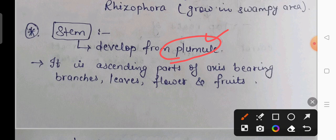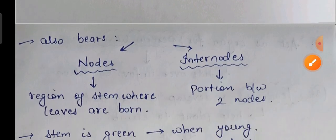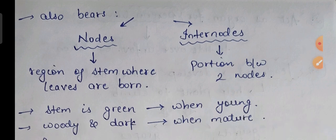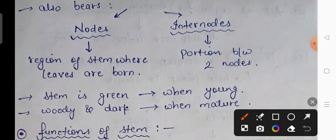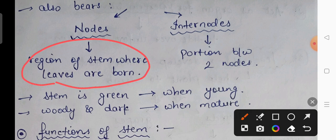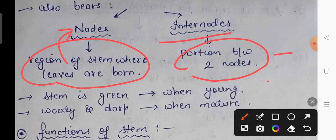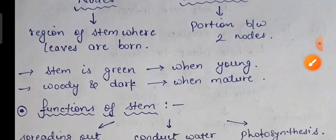Nodes are the areas where leaves arise. The region between two nodes is the internode. The stem is generally green in color when the plant is young. When the plant is fully mature, the stem becomes woody and takes on darker color shades. The functions of the stem include: spreading out branches bearing leaves, flowers, and fruit; conducting water and minerals; and sometimes assisting in photosynthesis.